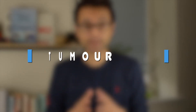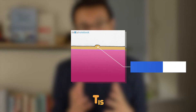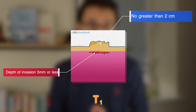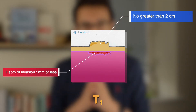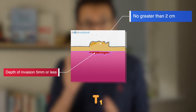So let's first look at T, the tumour. We have TX, where the tumour cannot be evaluated. We then have TIS, which is a carcinoma in situ — a very early cancer that hasn't spread through more than one layer of the tissue. Then we have T1, where the tumour at its greatest dimension is no greater than two centimetres, and the depth of invasion is no greater than five millimetres. So a maximum tumour dimension of two centimetres or less and a maximum depth of invasion of five millimetres or less.